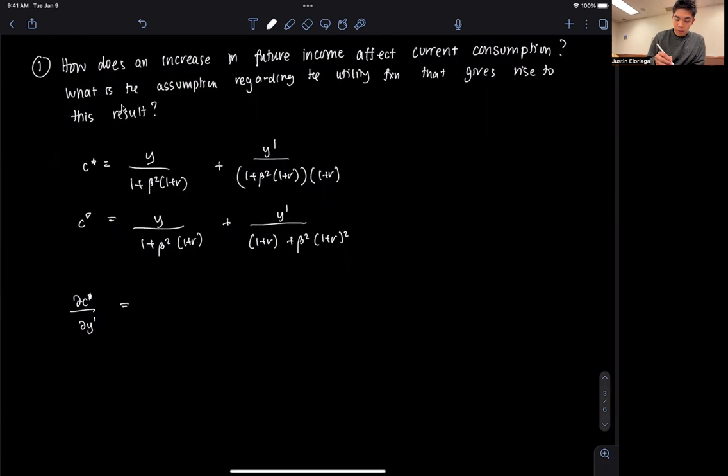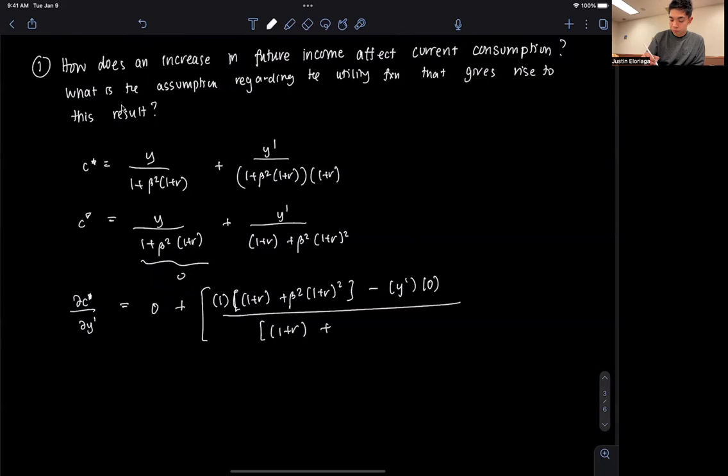So, if we do that, there is no y prime here in the first term, so that's 0. So it's going to be 0 plus, we have a y prime here, then we're going to use quotient rule. That's going to be a derivative of the one on top, that's 1, times the bottom, 1 plus r plus beta squared times 1 plus r squared, minus, copy the top y prime, then derivative of the bottom with respect to y prime, that's 0, divide both sides by the denominator squared.